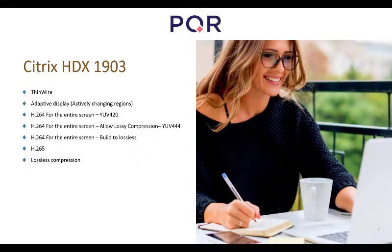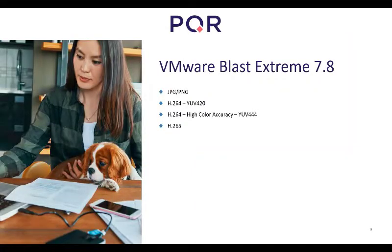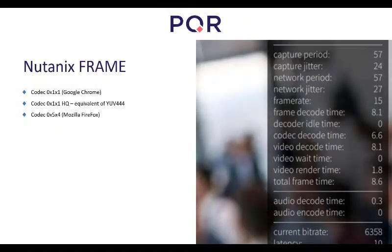There's also H264 for the entire screen set to build-to-lossless, which uses lossy compression for moving images and lossless for still images. Of course there's also the newer codec H265, and normal lossless compression. For VMware Blast Extreme, the options are somewhat fewer but it supports JPEG/PNG, H264 with YUV 420, and H264 high color accuracy based on YUV 444.